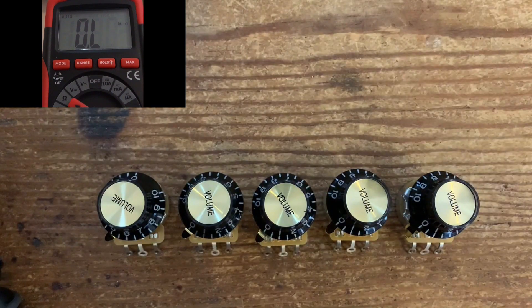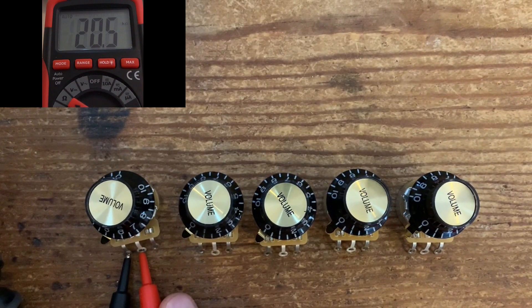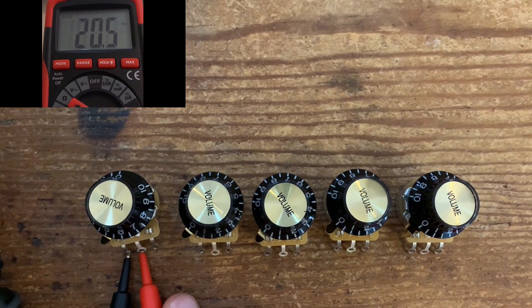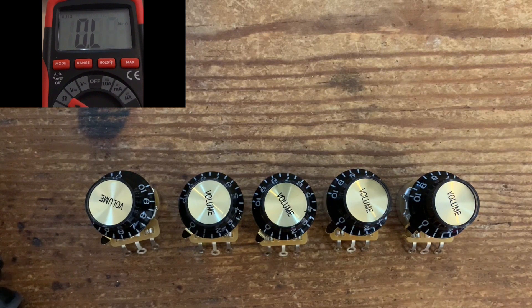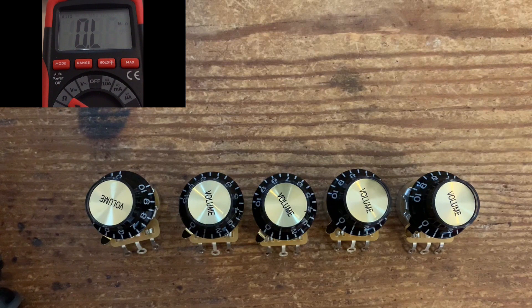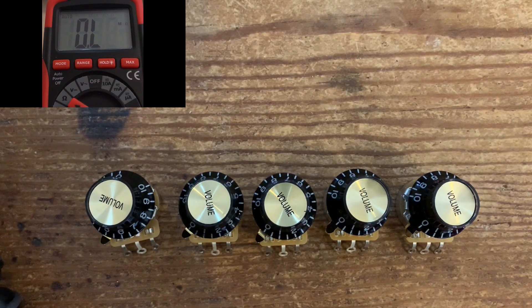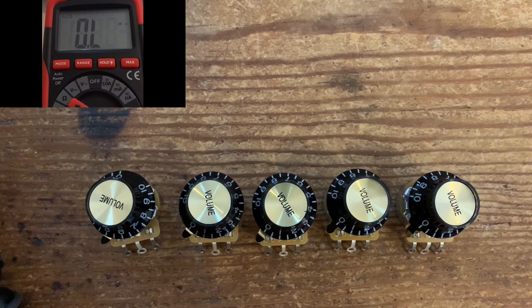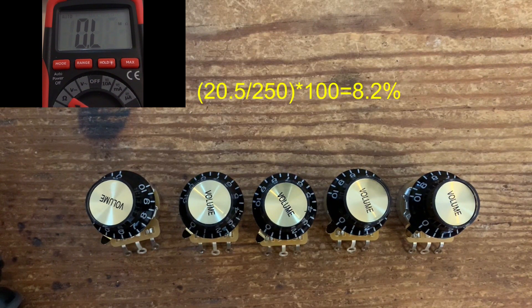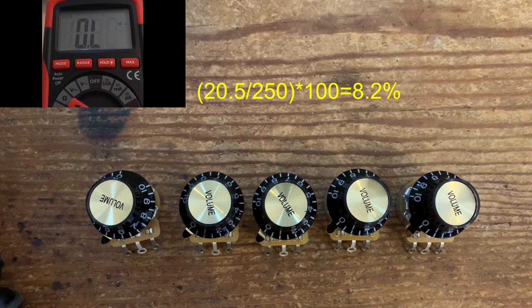To work out the resistance taper, the taper curve of the pot, we put it down to 5, so it's 50%, and we take our reading. It's coming in at 20.5. The way to do it, you take the reading, so it's 20.5, you divide that by the overall resistance reading of the pot, which was 250.